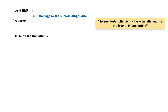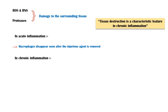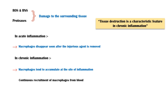In acute inflammation, macrophages disappear soon after the injurious agent is removed, either by dying off or making their way into lymphatics. However, in chronic inflammation, macrophages tend to accumulate at the site of inflammation. This is due to the continuous recruitment of macrophages from blood, local proliferation of macrophages at the site of inflammation, and immobilization of macrophages. Immobilization is due to the secretion of migration inhibitory factor by lymphocytes.